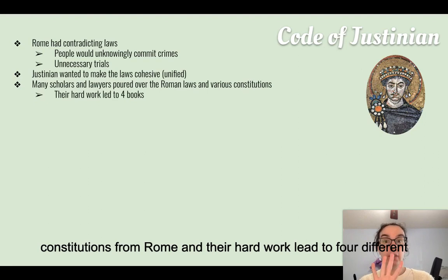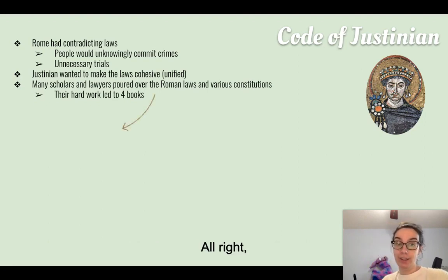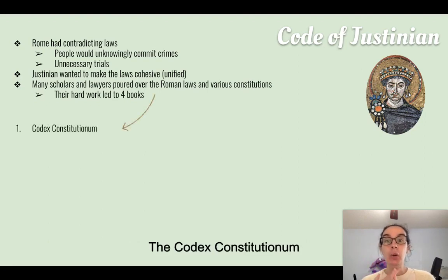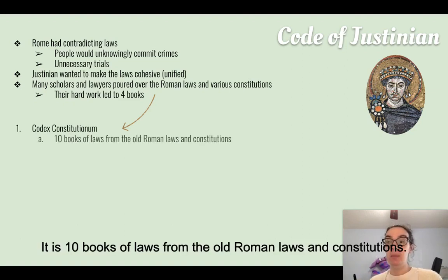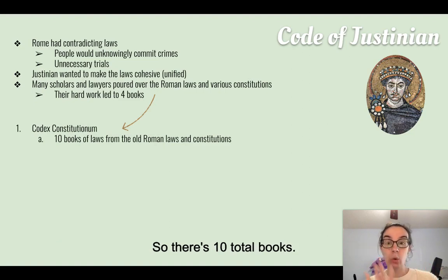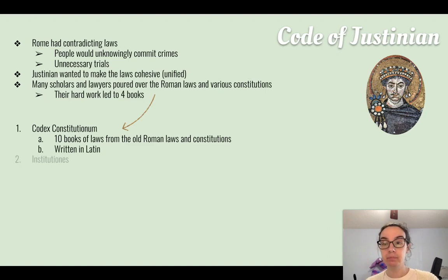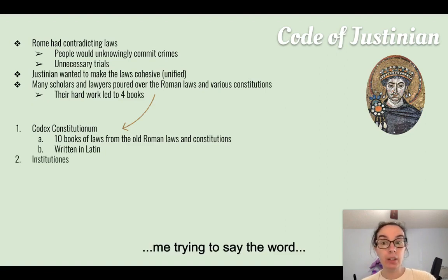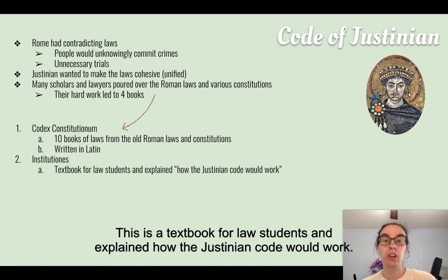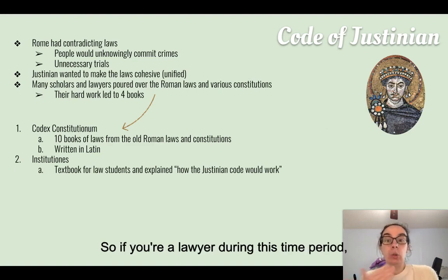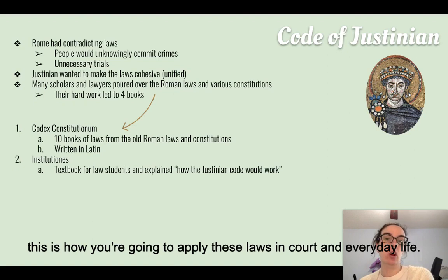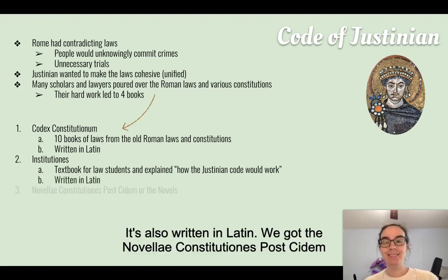Their hard work led to four different books. The first is the Codex Constitutionum — it is 10 books of laws compiled from the old Roman laws and constitutions, all written in Latin. The second is the Institutiones, a textbook for law students that explained how the Justinian Code would work — how lawyers would apply these laws in court and in everyday life. It is also written in Latin.